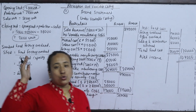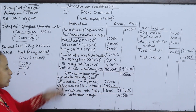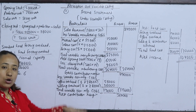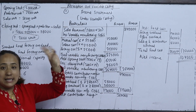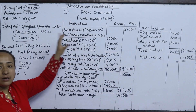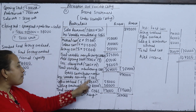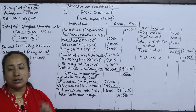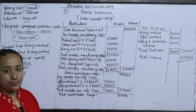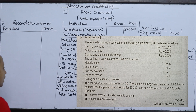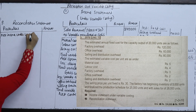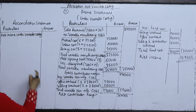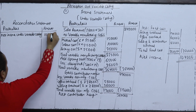To summarize the variable costing format: Sales minus variable manufacturing cost of goods sold gives gross contribution margin; minus variable non-manufacturing costs gives net contribution margin; minus fixed costs gives net income. Net income under variable costing = Rs. 1,04,000.